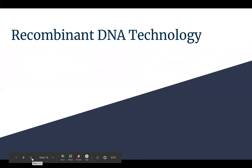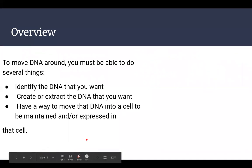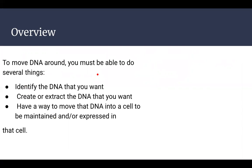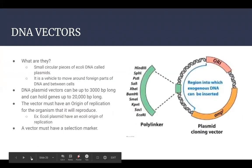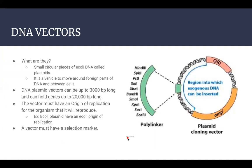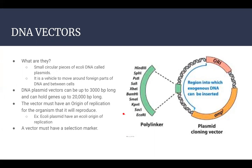Now we're going to talk about recombinant DNA technology, which is the material covered in the last week of class. As an overview: you need to identify the DNA you want, create and extract it, and have a way to move it into a cell so it can be expressed or maintained. A way to do this is by using DNA vectors — small pieces of E. coli DNA called plasmids — which are vehicles to move foreign DNA between cells. They can be from 3,000 base pairs long and hold genes up to 20,000 base pairs. A vector must have an origin of replication so the organism keeps reproducing that gene.